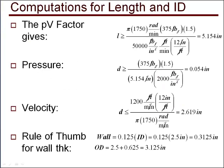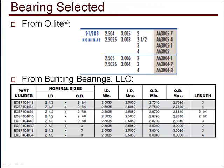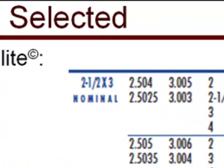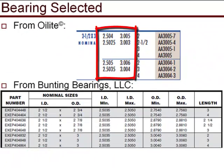Continuing the review, these calculations show the minimum length and the minimum and maximum ID for the bearing. Also, the rule of thumb for the wall thickness gave us the OD for the bearing. From this, a nominal 2.5 x 3 x 3 bearing was chosen and we used two of these to get the length we needed. Now, looking in the Oilite and Bunning catalogs, we locate the nominal size of the bearing and see the limits for OD and ID.